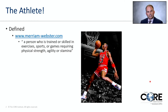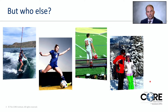What is the athlete? The athlete is defined by Merriam-Webster as a person who is trained or skilled in exercises, sports, or games requiring physical strength, agility, and stamina. That's a picture of Michael Jordan — probably the ultimate athlete. But who else is the athlete? Our wake surfer, soccer player, high school football player, or the mom and dad — both of whom have sustained their own ACL injuries.